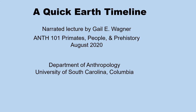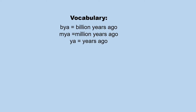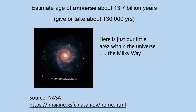I'd like to take you through a quick Earth timeline. Let's begin by setting out some of the initials that you'll see. BYA stands for billion years ago, MYA for million years ago, and YA for years ago.